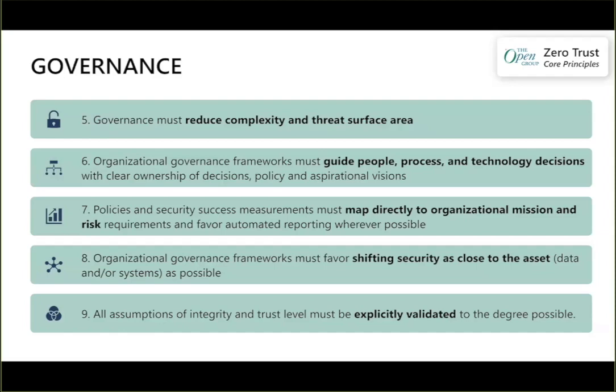Policies and security must amount directly to the organizational mission and risk. Security for security's sake is pointless. Without the business, there is no security. You have to make sure you're aligned to that organizational mission and risk, and as much as possible favor automated reporting — because the metrics that you measure manually simply won't get measured. You want alignment that is automated and connected to the organizational mission.